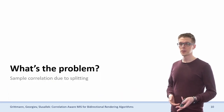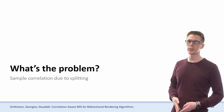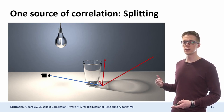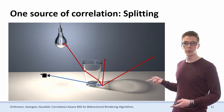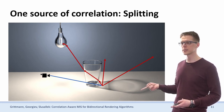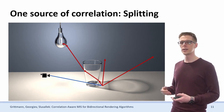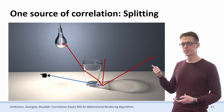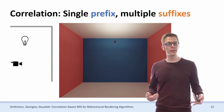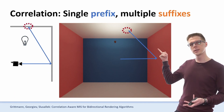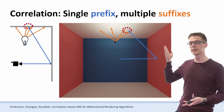So why is that a problem? Let's talk about where that correlation is actually coming from and what type of correlation we are talking about. We are talking about correlation due to splitting, which means that we have a single camera prefix that at some point along the path is continued by multiple suffixes. That is a very effective technique if most of the variance is due to the suffix component. Now, photon mapping is in effect a splitting technique. We have a camera prefix, and we do merging with multiple light path suffixes that end up nearby that camera prefix.